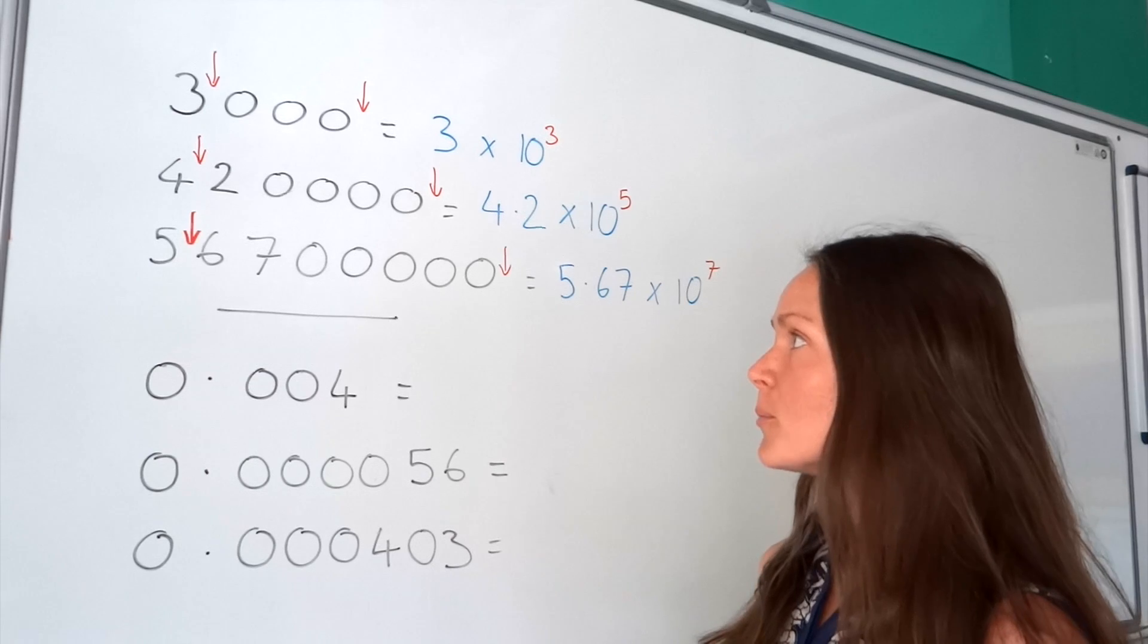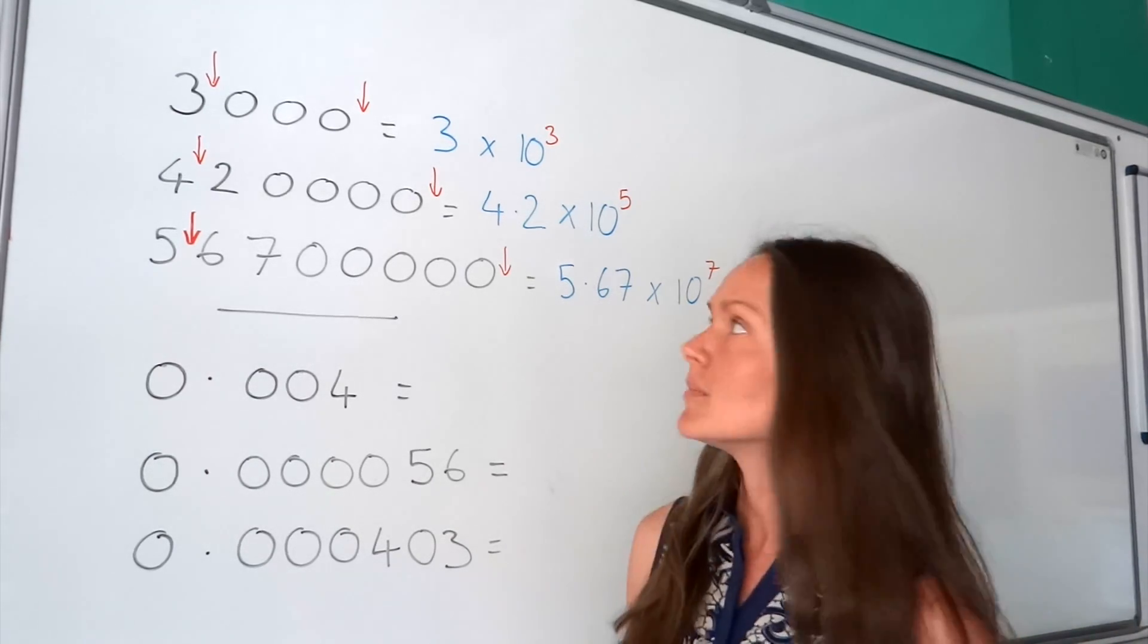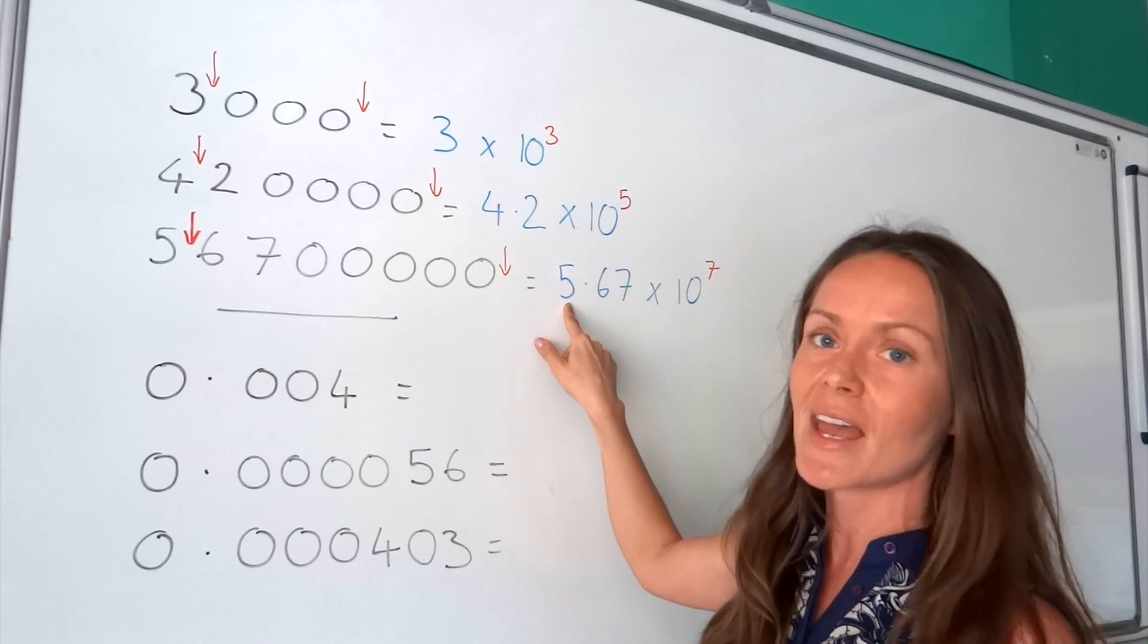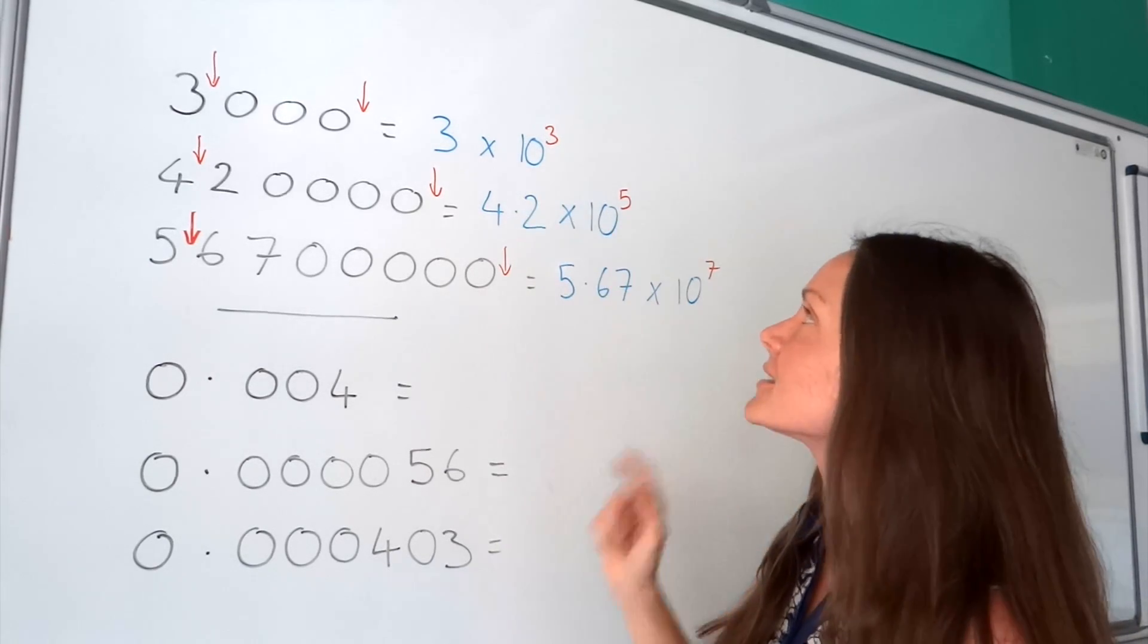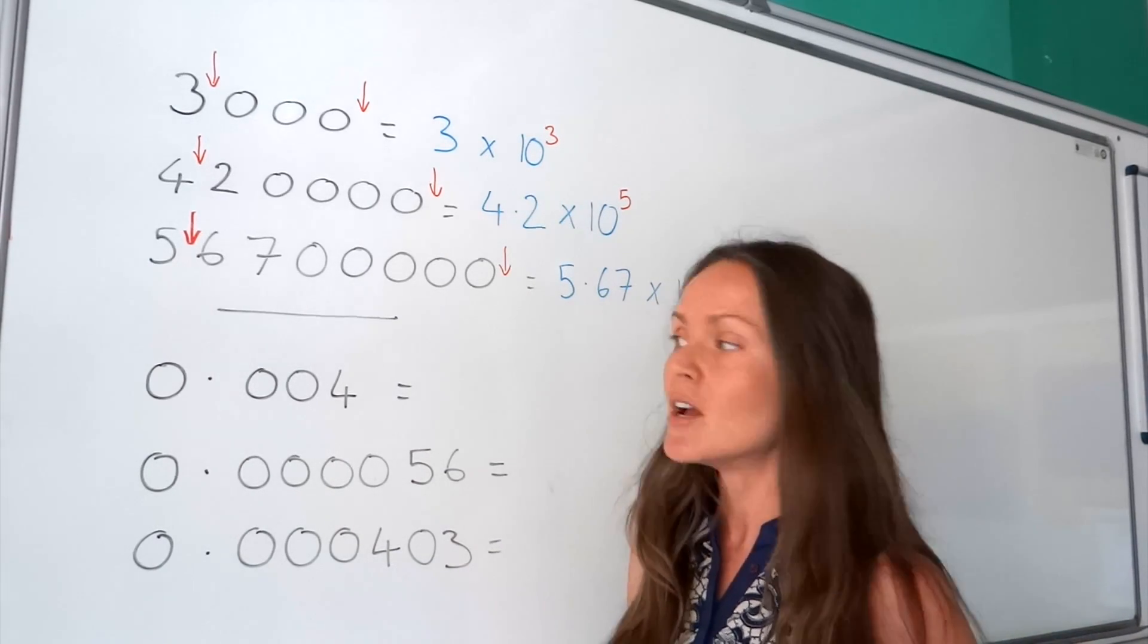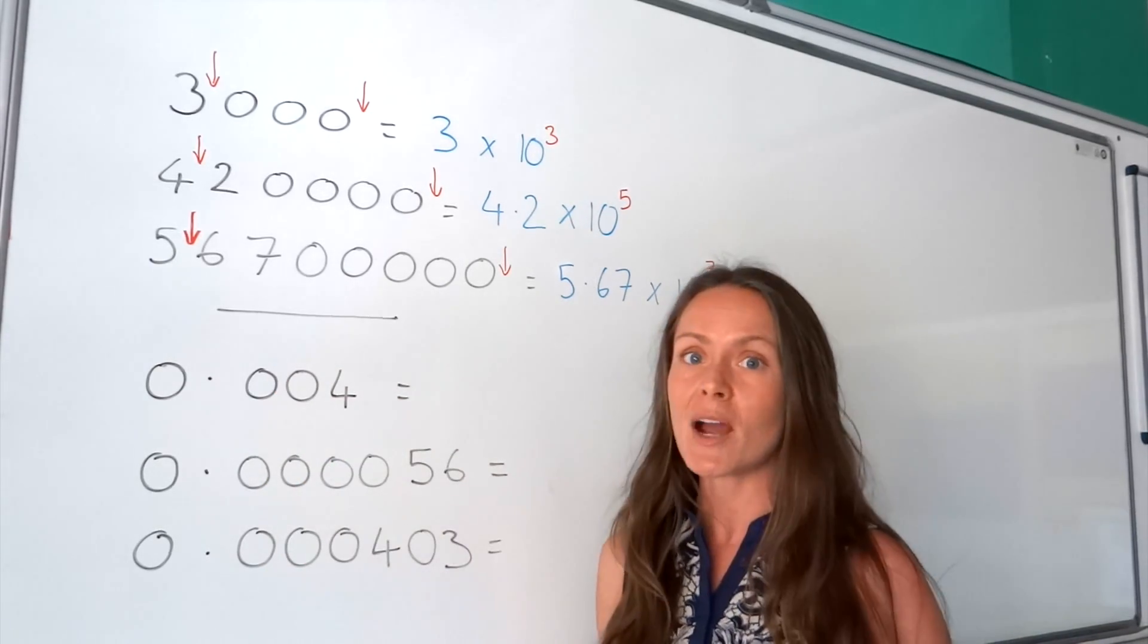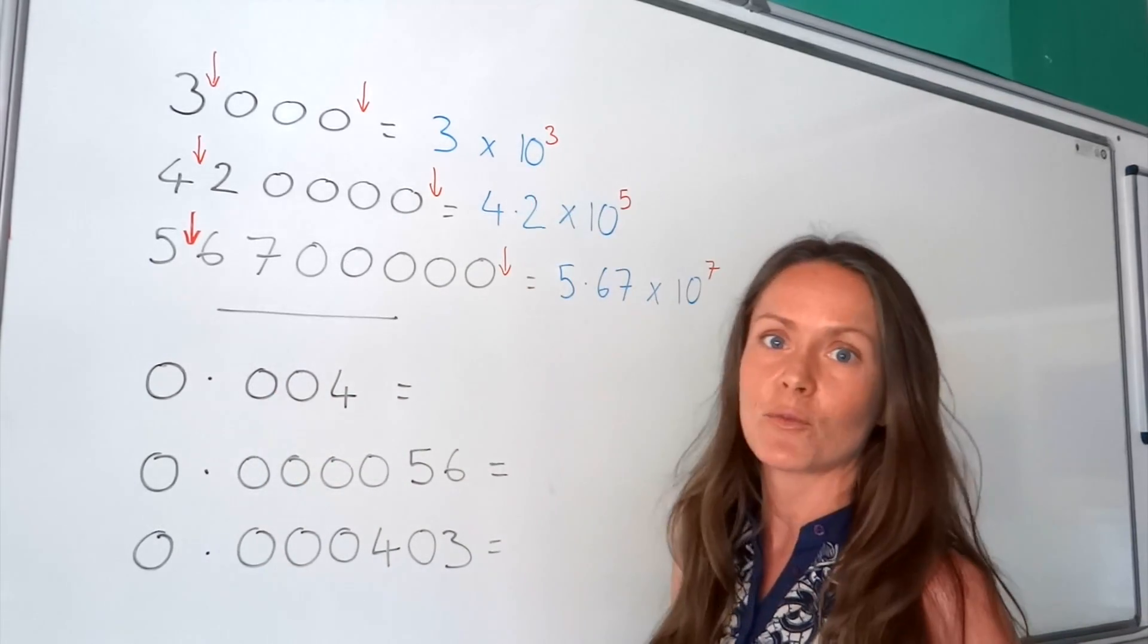Now, with small numbers, it's almost the same. Okay, it's still the same idea with this number between 1 and 10 and times it by 10. Except the power, this time, is going to be negative. So whenever you've got really small numbers, like these ones, the power on the 10 will be a negative power.